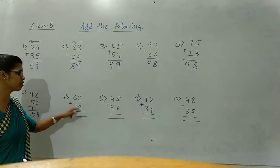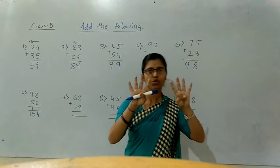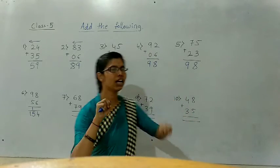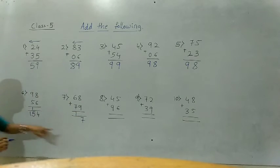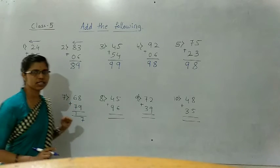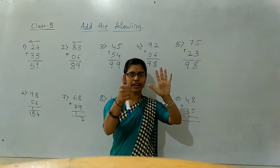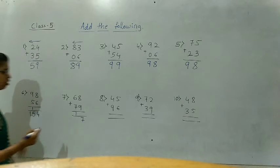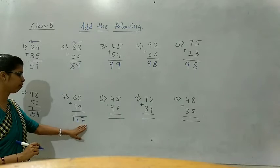Next one — 8 plus 9. Hold 8 fingers, the below number is 9. Count after 9: ten, eleven, twelve, thirteen, fourteen, fifteen, sixteen, seventeen. Write 1 here and 7 here. Next, 6 plus 7 — hold 6 fingers, count after 7: eight, nine, ten, eleven, twelve, thirteen. 13 plus carry 1 equals 14. That is 149.